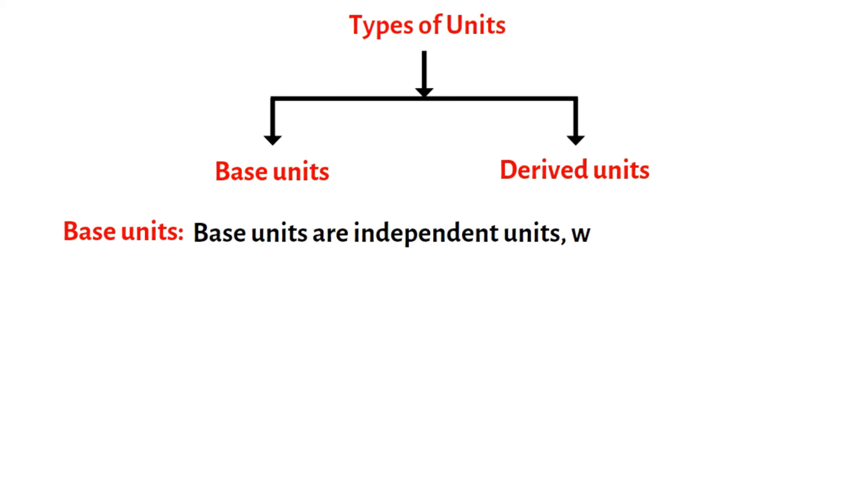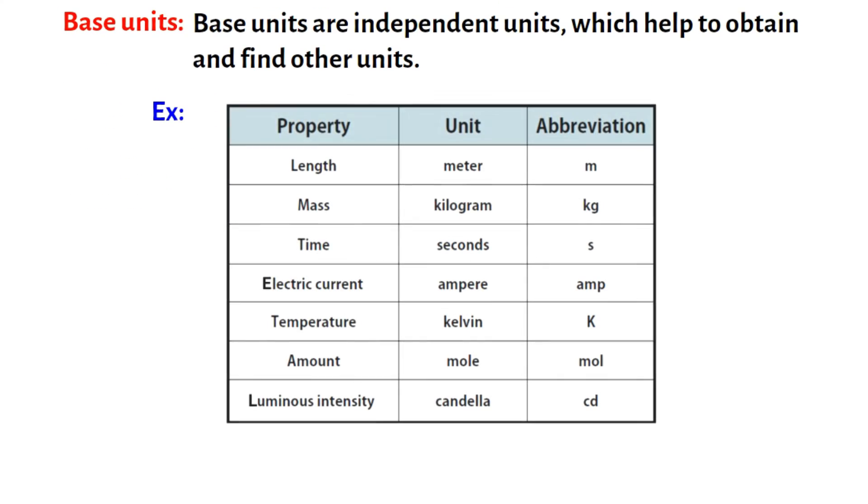Types of Units. Like physical quantity, units are also two kinds, base units and derived units. Base Units. Base units are independent units which help to obtain and find other units. These units can neither be changed nor can be related to any other base units. For example, the units of length, mass, time, electric current, temperature, amount of substance, and luminous intensity.